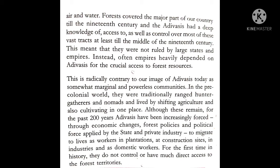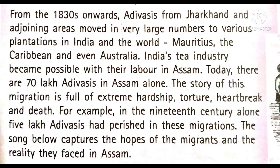They are now forced to work in industries and as domestic helpers. For the first time in history, they do not control or have much direct access to the forest territories which they initially used to have till the mid-19th century. From the 1830s onwards, Adivasis from Jharkhand and adjoining areas moved in very large numbers to plantations in India and the world — such as Mauritius, the Caribbean and even Australia. India's tea industry became possible with their labour in Assam.